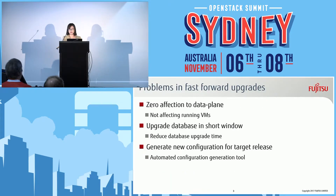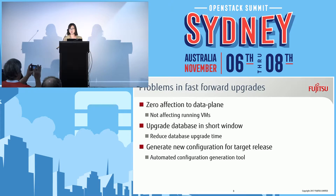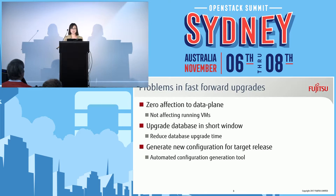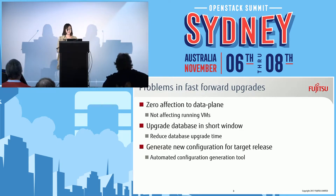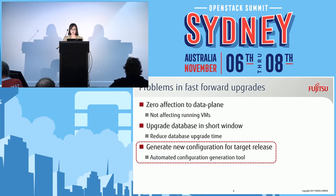When we are trying to do this, we have several issues. The first one is how can we guarantee zero affection to the data plane — meaning while we are doing the data plane and control plane upgrade, we cannot affect our running VMs. Normally, people solve this by live-migrating VMs between compute nodes. Secondly, since we are jumping through several releases, how can we reduce the database upgrade time, because we do not want to be upgrading the database for two or three days. And lastly, once we finally reach our target release, how can we create the new configuration files? Even in adjacent releases, the configuration files tend to change a lot. This is what our talk is going to target.